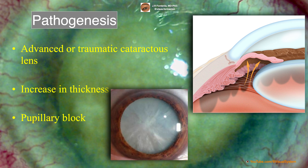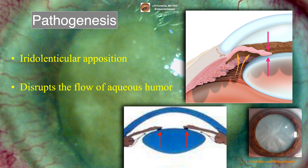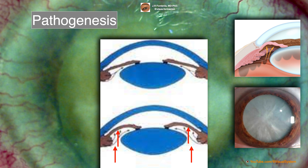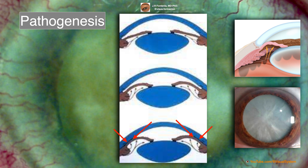As a pathogenetic mechanism, senile advanced or traumatic cataract increases the thickness of the lens and may cause pupillary block and angle closure. This iridolenticular apposition disrupts the flow of aqueous humor from the posterior chamber to the anterior chamber, resulting in the accumulation of aqueous humor in the posterior chamber, pushing the iris root forward, which may ultimately contact the trabecular meshwork and lead to angle closure.